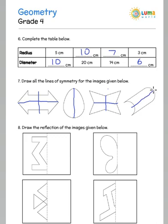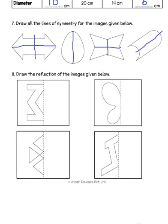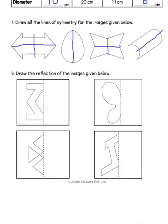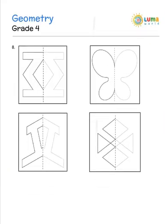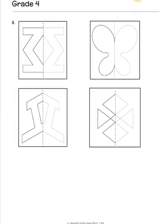When I fold it across here, I get two equal halves. The next question is draw the reflection of the images given below, which means you have this as a line of symmetry and you have to complete the figure on the other side. Here is what I have drawn, and please check whether you have got it correct. If you have enjoyed this, log on to the website and get many more interesting ones.